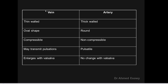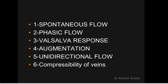Venous flow may sometimes be pulsatile, but in most cases it is continuous — a continuous wave — while arterial flow is pulsatile. The six physical characters of venous flow are: spontaneous flow, phasic flow, Valsalva response, augmentation, unidirectional flow, and compressibility of veins. We will discuss these six properties next.